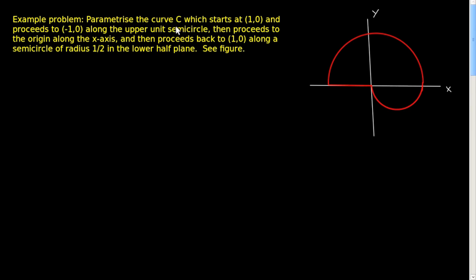The question is: you want to parametrize the curve C, which is shown over here. It starts at (1, 0), proceeds along an upper unit semicircle to (-1, 0), then along the x-axis to the origin, and then along a lower semicircle back to (1, 0). That's the curve, and what we want is to parametrize it.